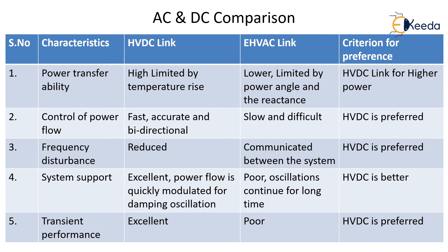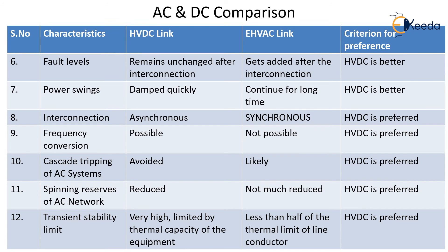For transient performance, HVDC links work effectively and are excellent, while EHVAC is poor. If a system is highly prone to transients, HVDC should be preferred. For fault levels, HVDC link fault levels remain unchanged after interconnection, whereas with EHVAC the fault level gets added up after interconnection — so HVDC is again better. For power swings, HVDC damps them out quickly, while in EHVAC power swings continue for a longer time — again favouring HVDC.